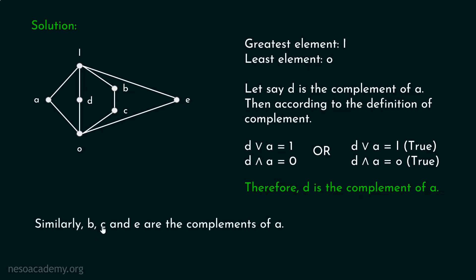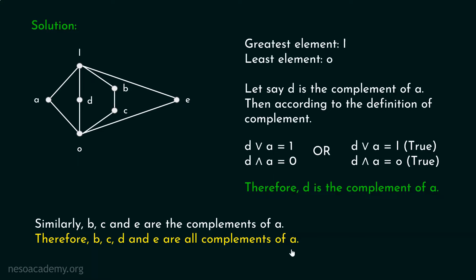Hence it is clear that B, C, D, and E are the complements of A. Let me tell you why I is not the complement of A: if we find the least upper bound of A and I, it is I, but the greatest lower bound of A and I is A — not O. Similarly, O is not the complement of A, because the least upper bound of O and A is A, not I. Hence O and I are not complements of A, but B, C, D, and E are.